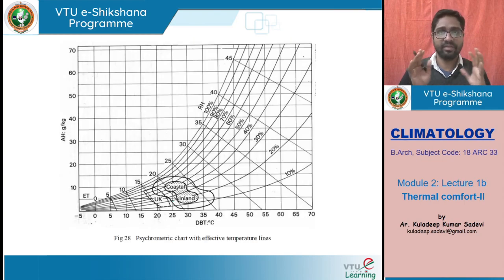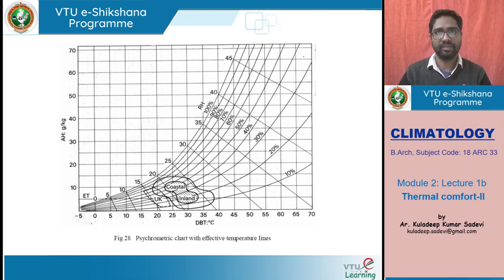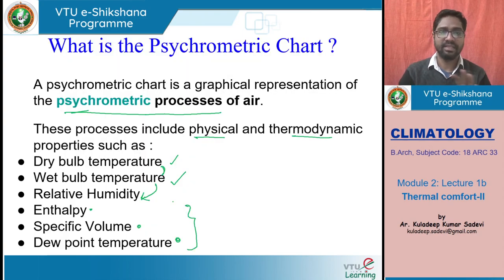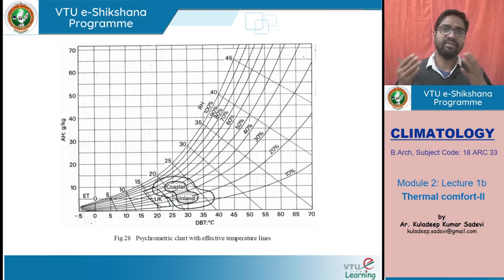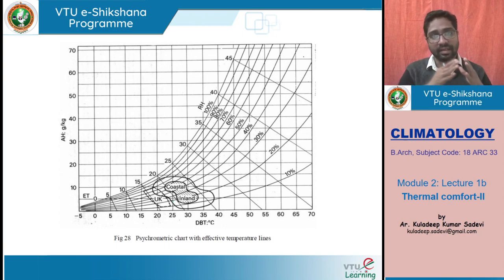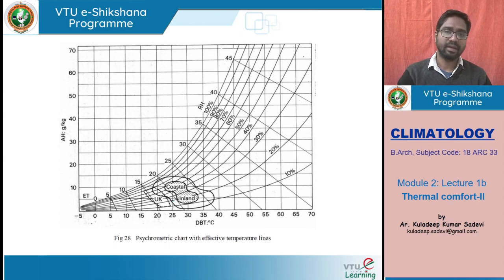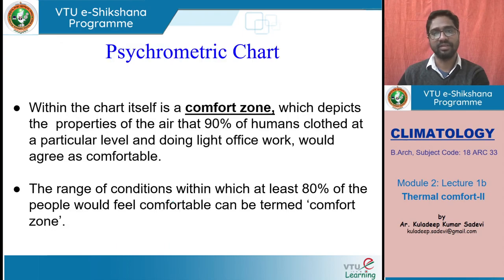All six metrics are represented in one single chart. Unlike a regular chart with just one x-axis and y-axis, the psychrometric chart has different angles and different axes — a curvilinear axis, straight axes, and angular axes. We will see what these different axes are depicting. Within the chart, we can define a comfort zone which depicts the properties of air where 90% of humans, clothed at a particular level and doing light work, are feeling comfortable. This comfort zone can be drawn and understood in the psychrometric chart to see where data points fall and how it helps us understand the climate conditions.